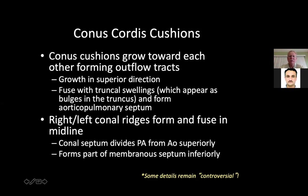There's growth in a superior direction, and it fuses with truncal swellings, which appear as bulges in the truncus and form the aortico-pulmonary septum. The right and left conal ridges form and fuse in the midline. The conal septum divides the pulmonary artery from the aorta superiorly.